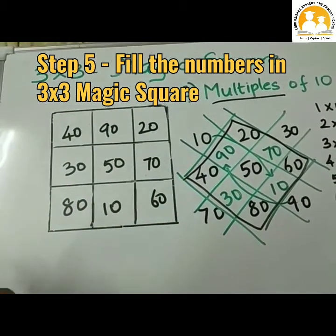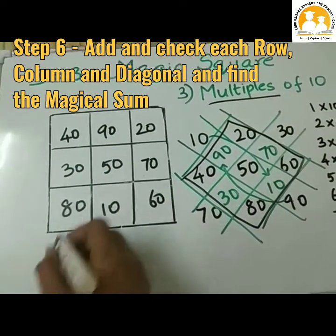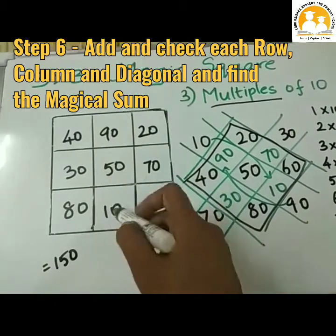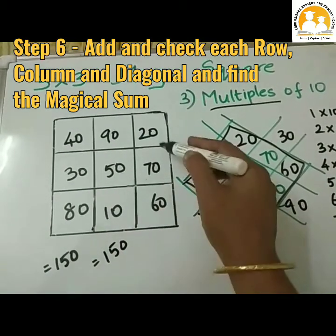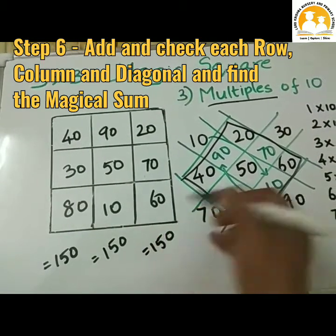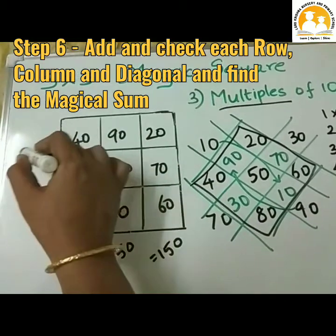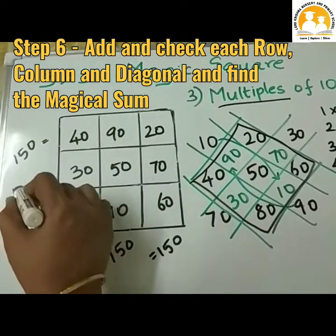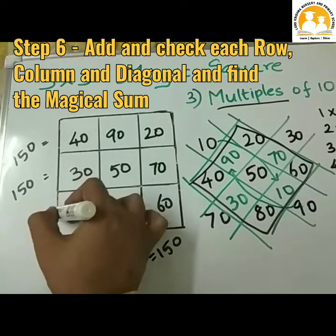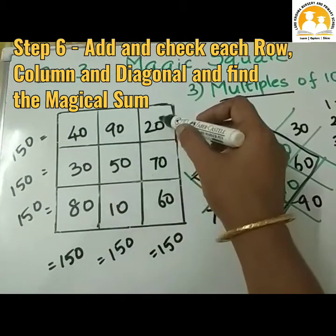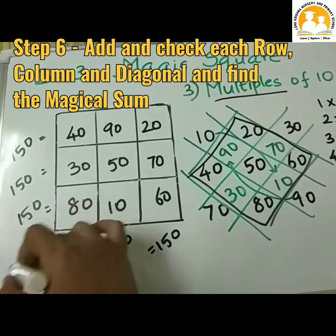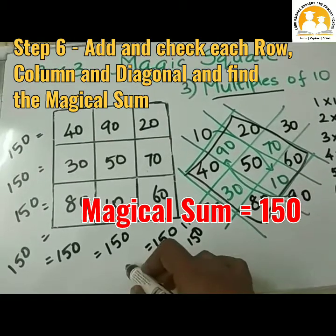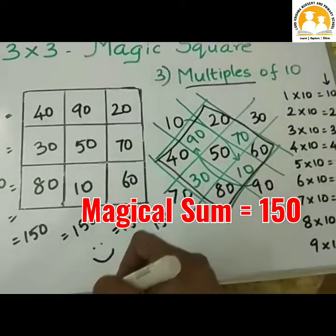Now let us verify: adding each row and column and diagonal should give the same magical sum. 20 plus 90 plus 40 is equal to 150. 70 plus 50 plus 30 is equal to 150. 60 plus 10 plus 80 is equal to 150. 20 plus 70 plus 60 is equal to 150. Diagonals also give 150. The magical sum is 150 and we have filled the magic square using multiples of 10.